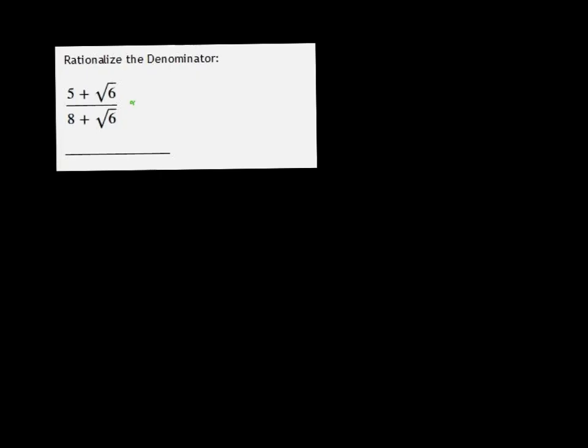So we want to multiply by the conjugate. The conjugate of the denominator is just the same but with a different sign. So this one is plus, so the conjugate will be minus.